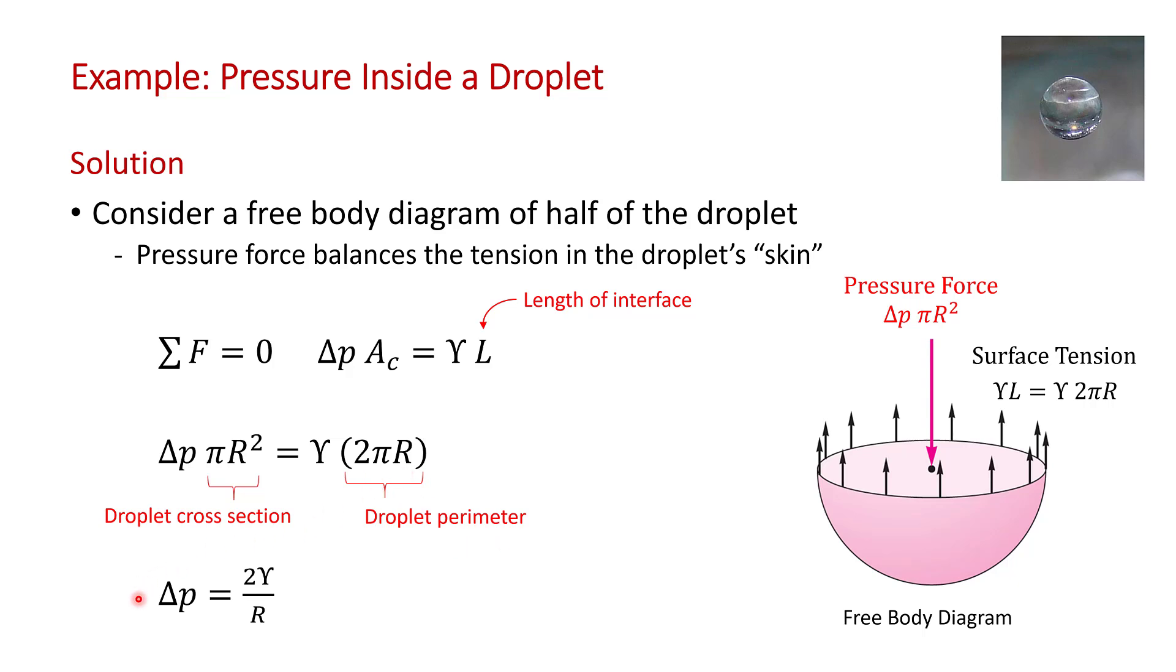You can check my algebra here. If you solve for delta p, you get that the pressure inside a little droplet of water is 2 times the surface tension divided by the radius of the droplet.